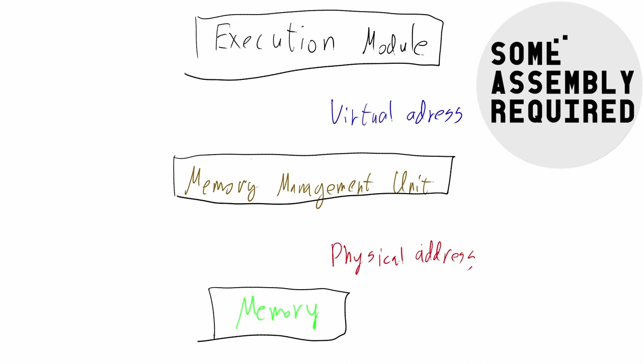The MMU translates virtual addresses to physical ones, but it also does access control. If, for example, we want a certain region to be accessible but only for reading, not for writing, we can mark the region as read-only in the MMU. Any attempt by the CPU to write to that memory will cause the CPU to raise an exception — specifically, a page fault.